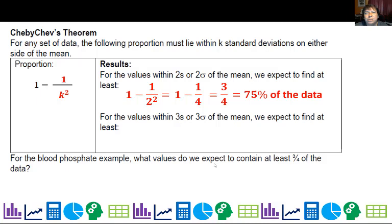For values within three standard deviations, I'm going to go one minus one over three squared, which is one minus one ninth or eight ninths, roughly 88.9% of the data is within three standard deviations of the mean.